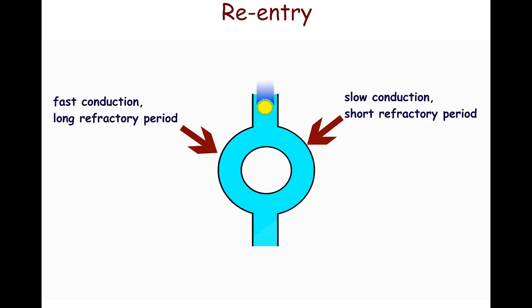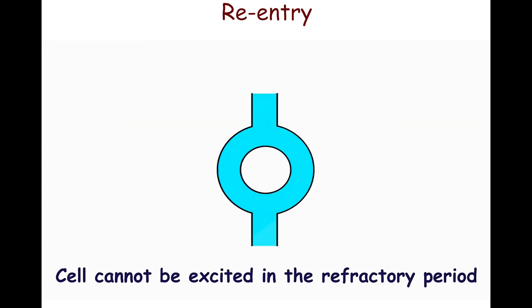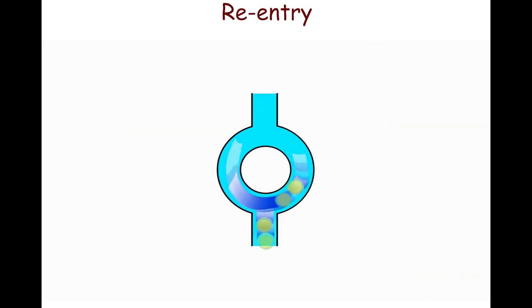An impulse is conducted via the fast pathway from the proximal to the distal conjunction. In the slow pathway, an impulse moving antegradely collides with an impulse traveling retrogradely from the fast pathway. However, the impulse cannot circulate via the reentry loop because there is a refractory period during which the depolarized tissue is not excitable.